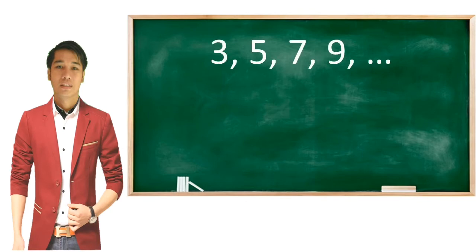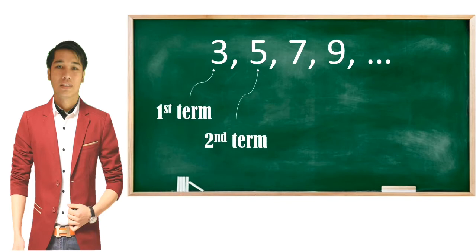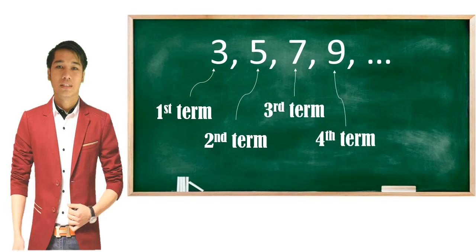Halimbawa: 3, 5, 7, 9. Here, 3 is the first term, 5 is the second term, 7 is the third term, and 9 is the fourth term.